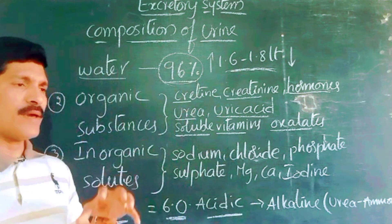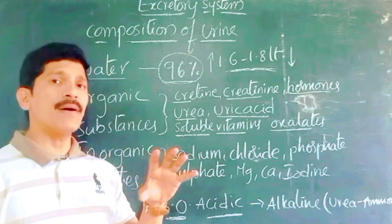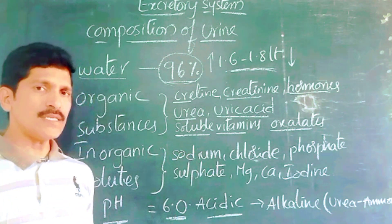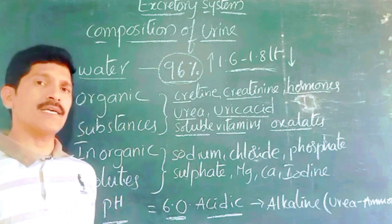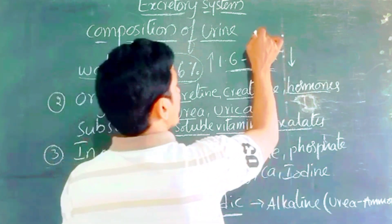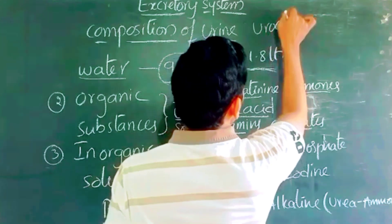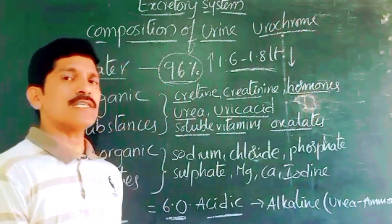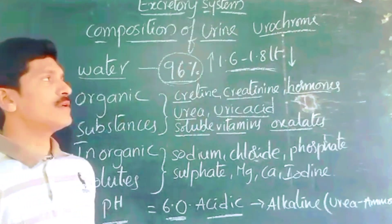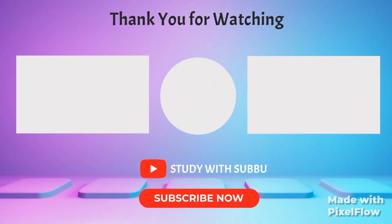Generally, urine is pale yellow in color — like an amber color. The color of the urine is amber because of an excretory substance called urochrome. Urochrome is the substance present in the urine that is responsible for its amber color.